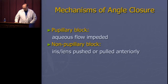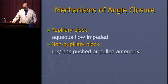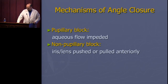Then we'll talk about the non-pupillary block mechanisms in even more detail. This is where you have contracture of the angle by membranes, or something pushing from posteriorly to anteriorly, closing off the angle structures and causing a secondary pressure elevation.